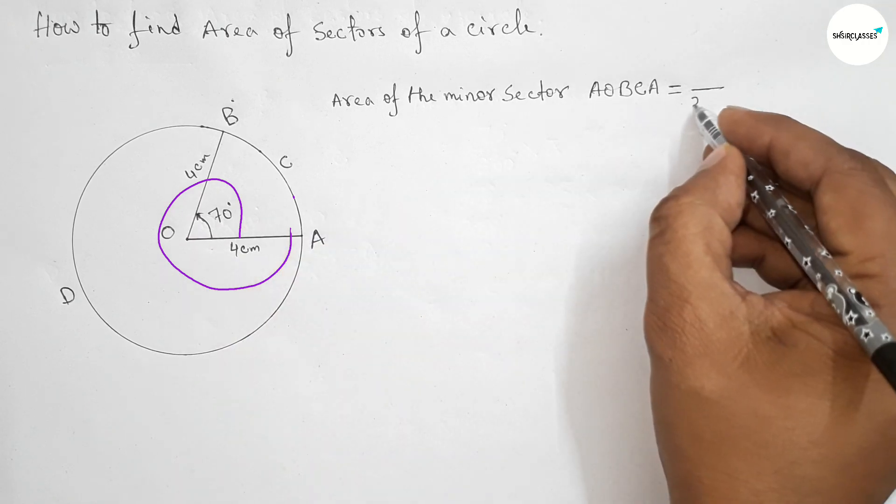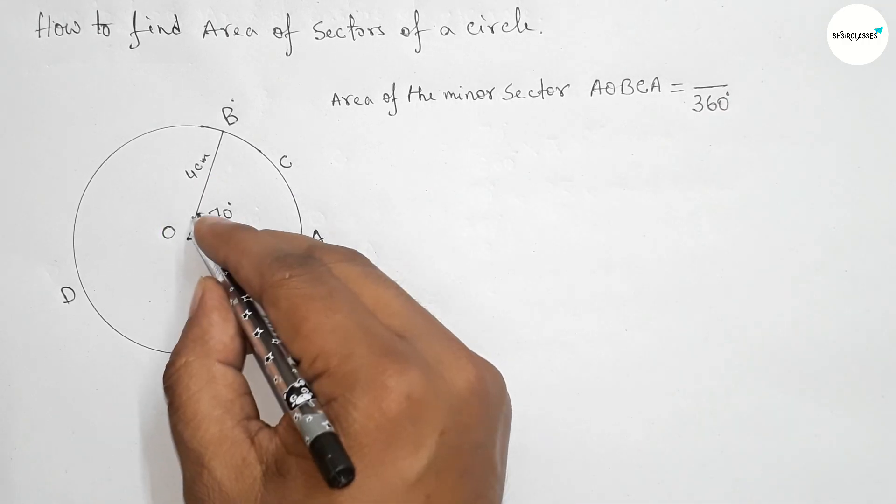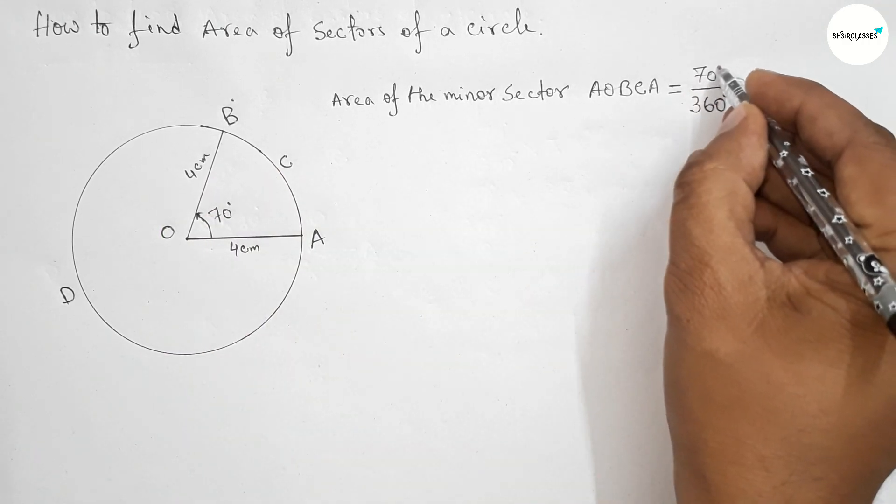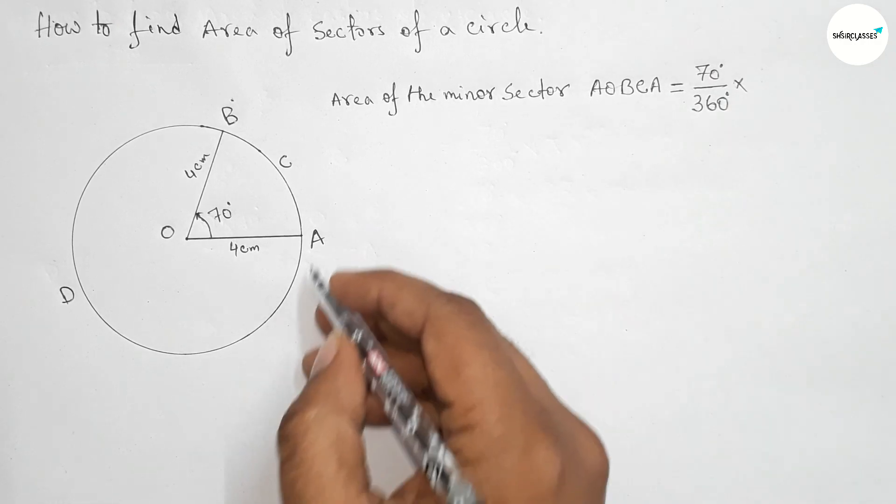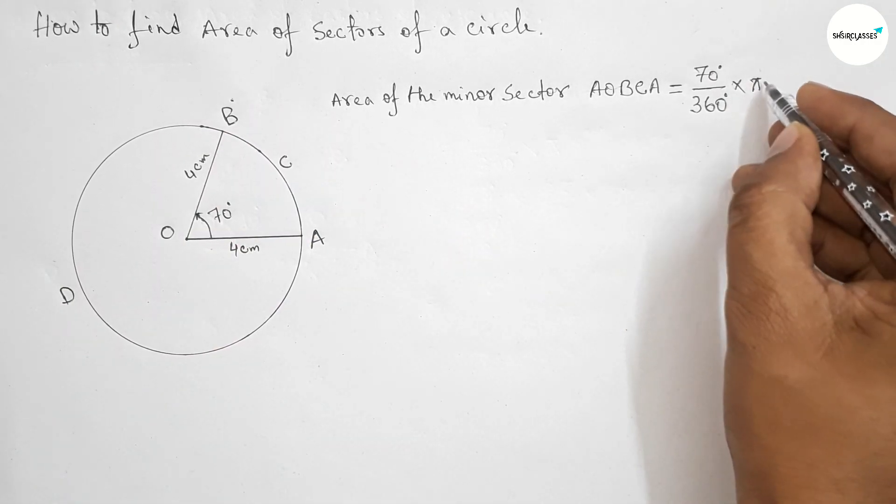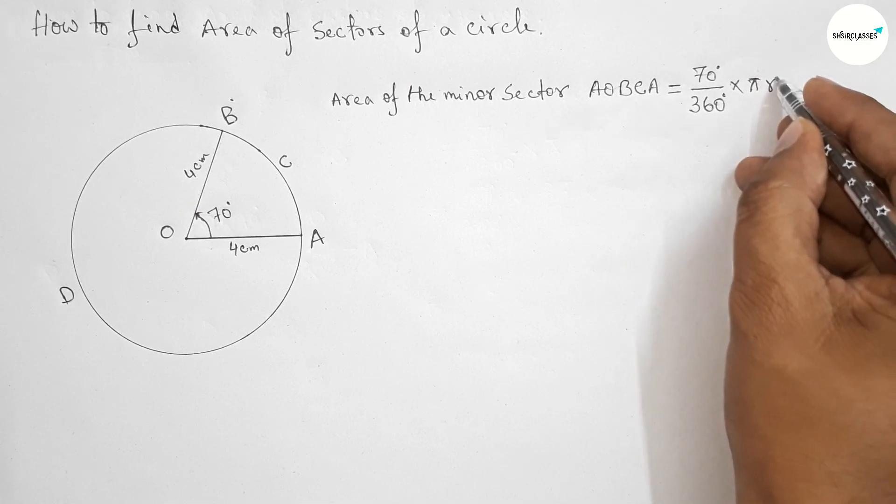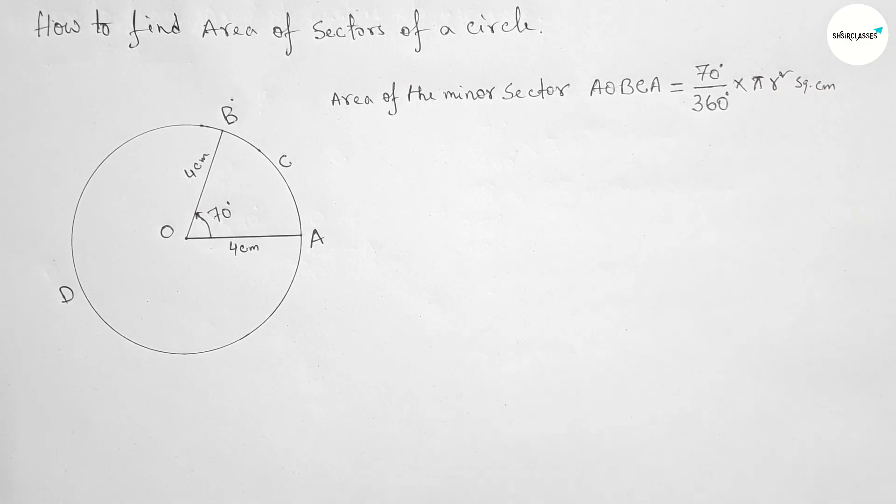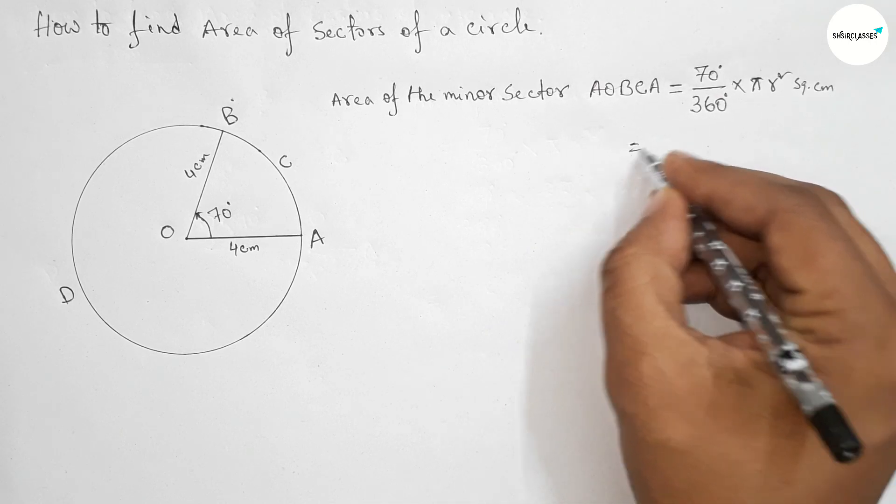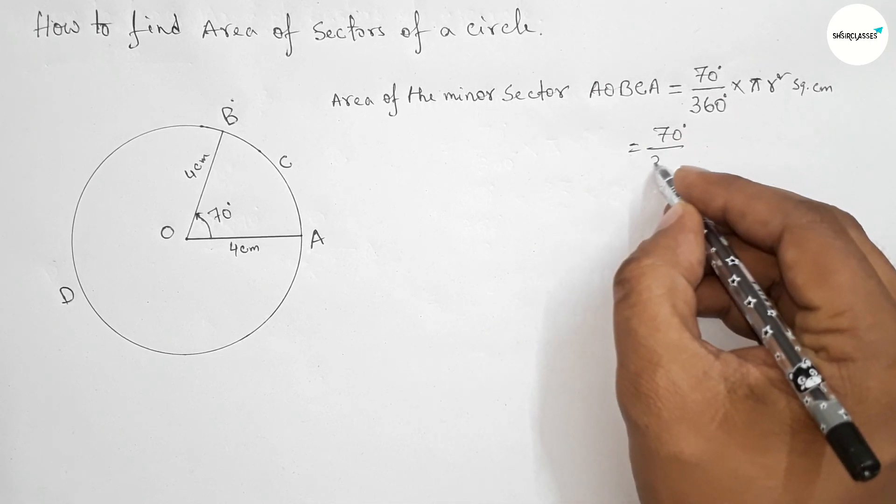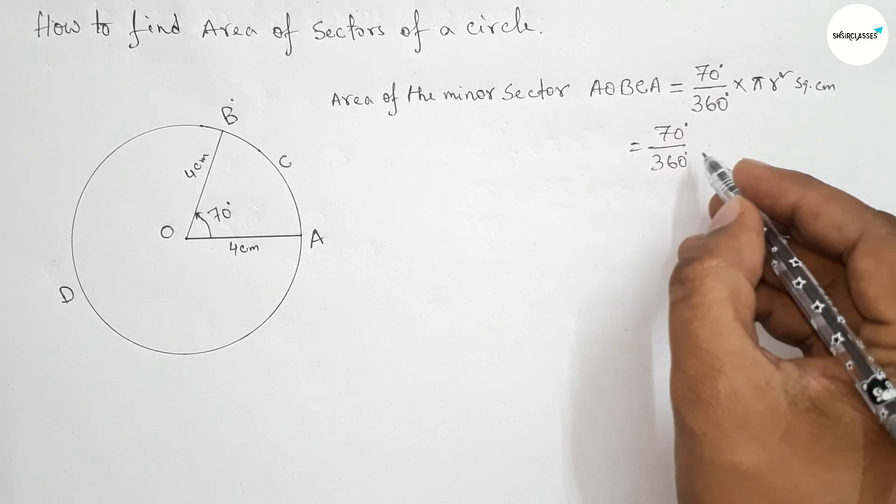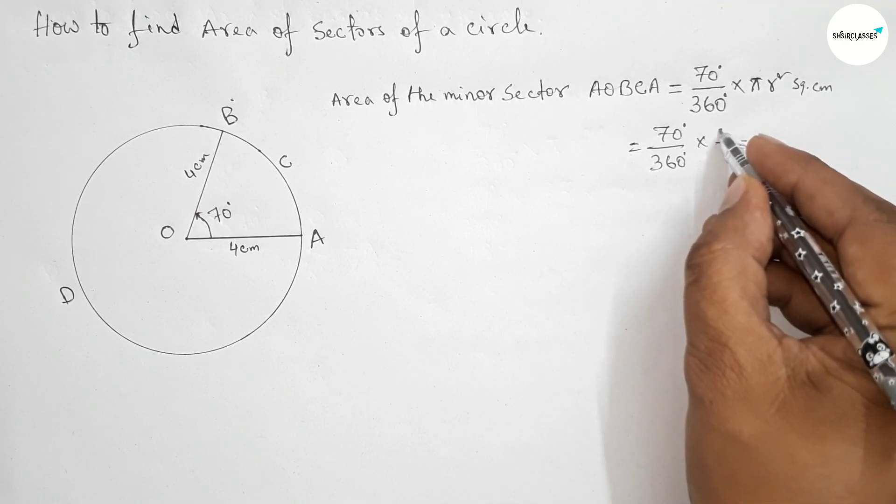Next, write down the total area of the circle. So the formula is πr². Now solve this. The value of π is 22/7 and the value of r is 4 centimeters.